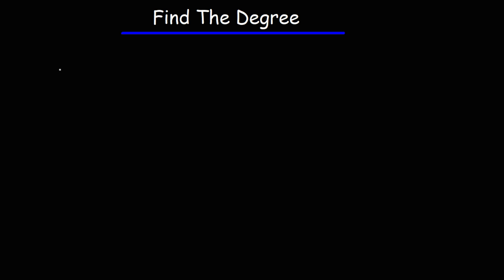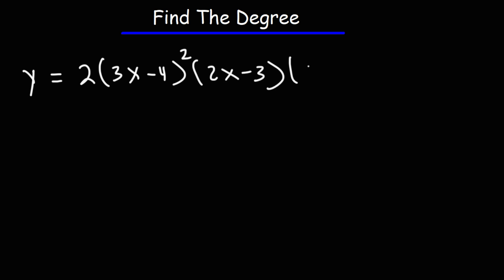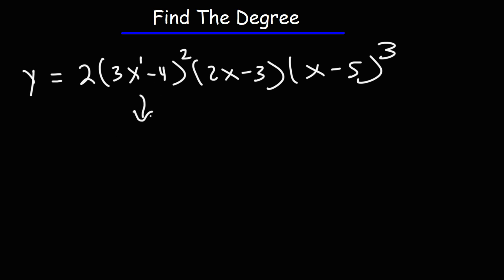Now let's try a different example. Sometimes you may be given the polynomial in factored form. To find the degree, you find the degree of the highest term. Here we have 3x — which is x to the first power — raised to the second power. If you were to FOIL (3x − 4)(3x − 4), the highest-degree term would be 9x squared, so the highest term is x to the second power.